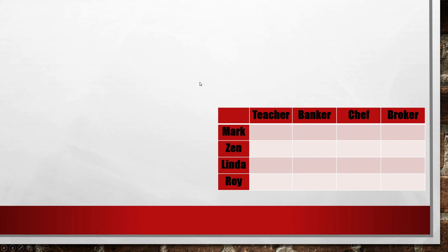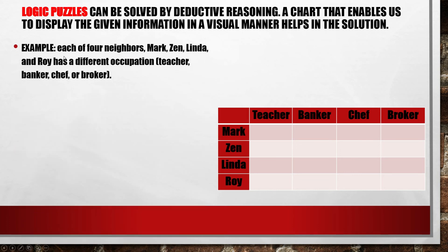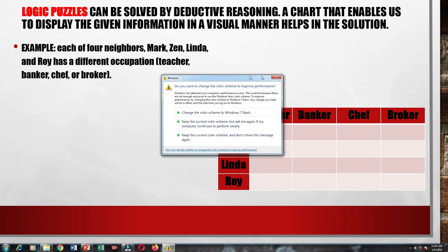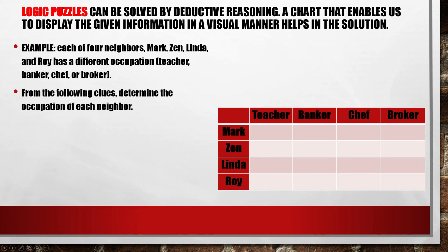Logic puzzles can be solved by deductive reasoning. A chart enables us to display given information visually. Each of 4 neighbors — Mark, Zen, Linda, and Roy — has a different occupation: teacher, banker, chef, or broker. We do not know who holds which occupation. From the following clues, we will determine each neighbor's occupation.